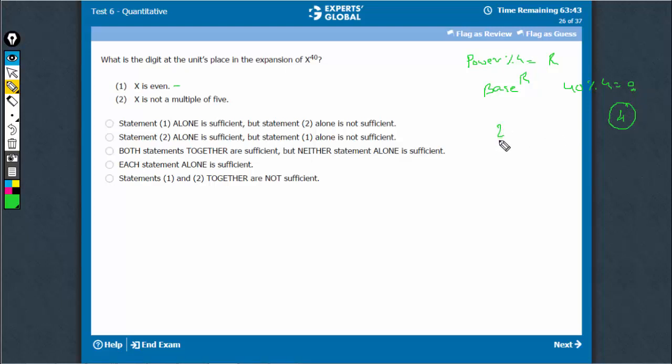The basis can have the units place as 2, 4, 6, etc. So, 2 raised to power 4 leads to a 6, 4 raised to power 4 leads to a 6, 6 raised to power 4 leads to a 6, 8 raised to power 4 leads to a 6.